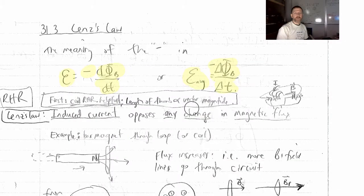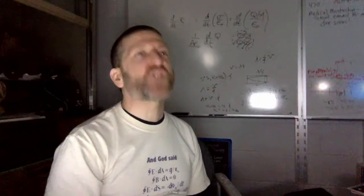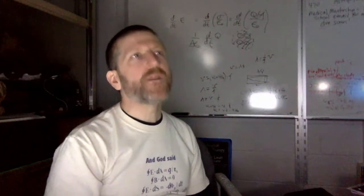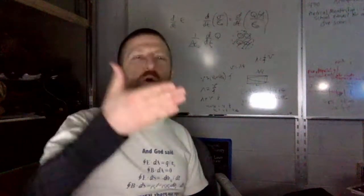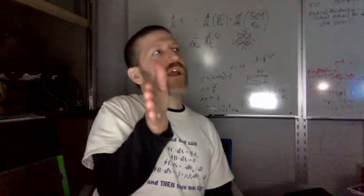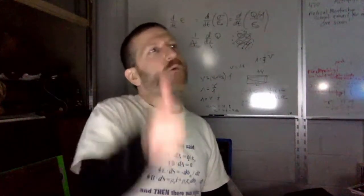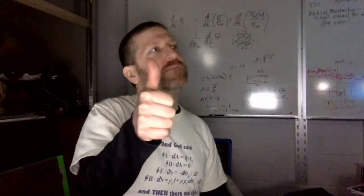Let's review the right hand rules, shall we? The first rule is called the force on a charge right hand rule. What you do for that rule is your fingers go in the direction of velocity, you bend your fingers in the direction of the magnetic field, and then your thumb points in the direction of the force.